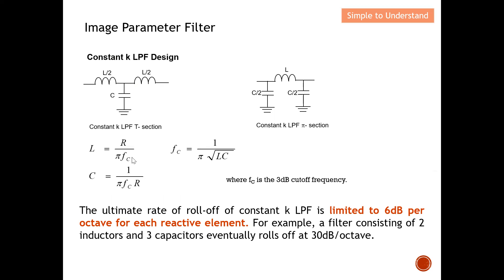There are two sets of formulas to compute the L and C values. The inductor value is L = R / (π × fc), where R is the input/output resistor and fc is the cutoff frequency of the low-pass filter. The capacitor value is C = 1 / (π × fc × R). The cutoff frequency is fc = 1 / (π × √(LC)), where fc is the 3 dB cutoff frequency.